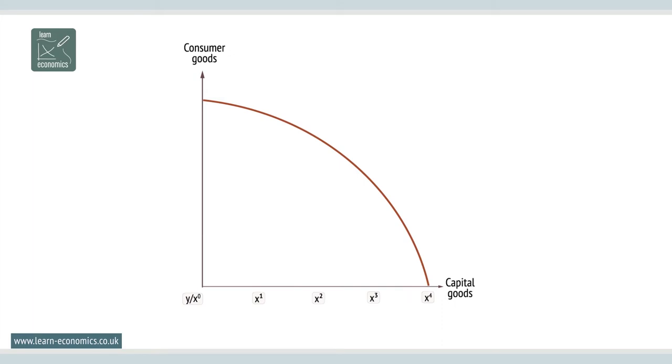Increasing a given quantity of capital goods, X0 to X1, leads to a small loss of consumer goods, Y12 to Y11.